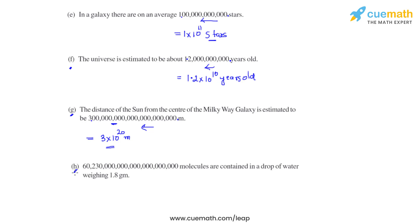We come to part H now. This huge number of molecules are contained in a drop of water weighing 1.8 grams. We convert this into standard form to make it easier to read, as this huge number would be very difficult to read otherwise. The decimal, currently here, should be moved between 6 and 0. Counting gives us 22 — the decimal should be shifted by 22 places towards left — so our answer will be 6.023 × 10²² molecules.